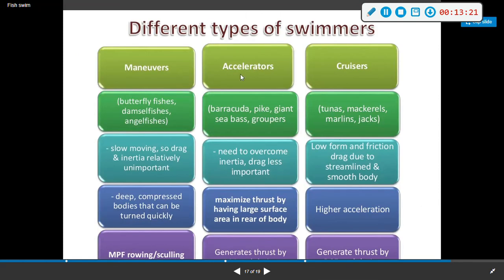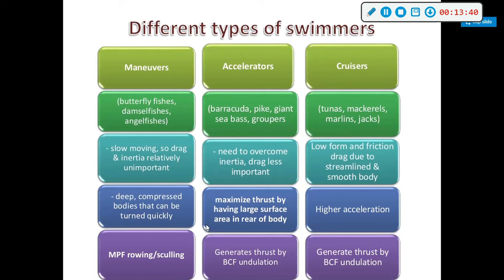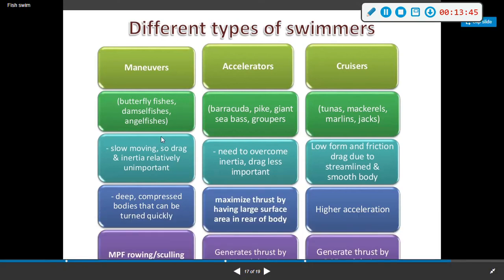Maneuverers — like your butterfly fish, damselfish, and coral fish — are slow-moving, so drag and inertia are relatively unimportant. They have deeply compressed bodies that can turn quickly. These are compressive forms with round fins, and they use MPF rowing and sculling.